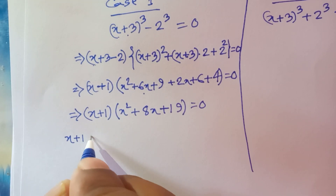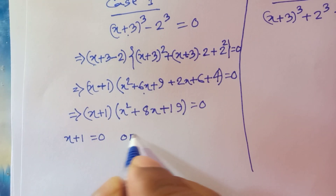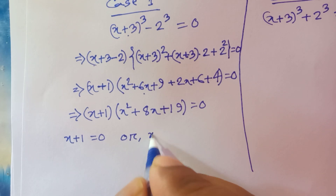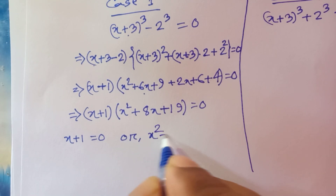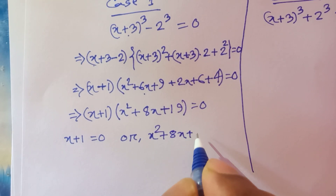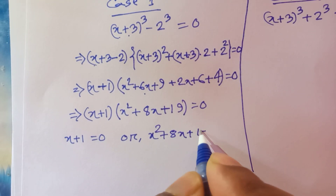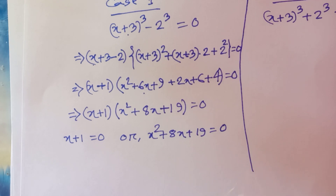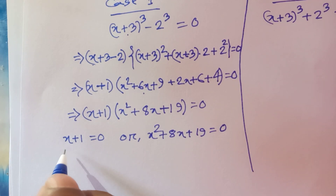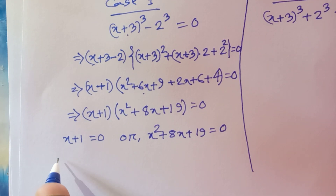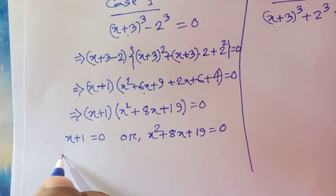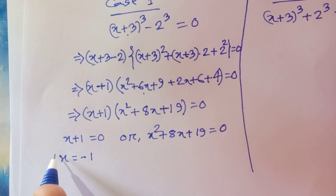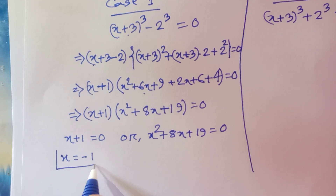We have two further solutions: x plus 1 equals 0, giving x equals minus 1. This is the first value, x₁ equals minus 1.